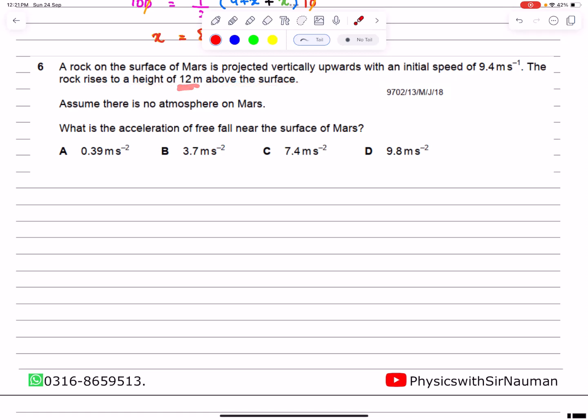The maximum height achieved is 12 meters. Assume there is no atmosphere on Mars, meaning air resistance is zero.